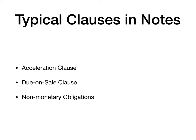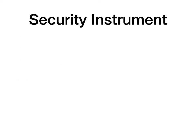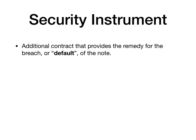The promissory note is the negotiable instrument that promises the maker will make payments to the lender. The promissory note is accompanied by a security instrument. The security instrument is an additional contract that provides the remedy for the breach or default on the note.